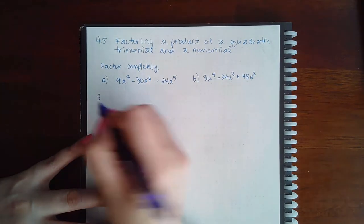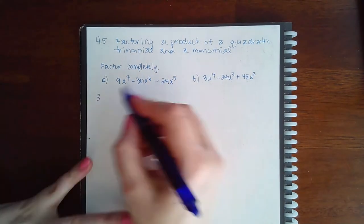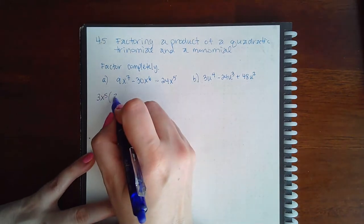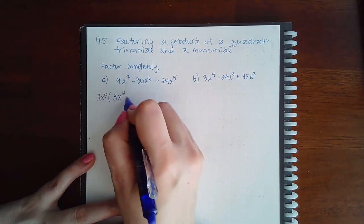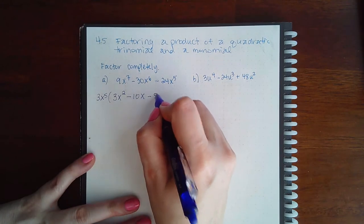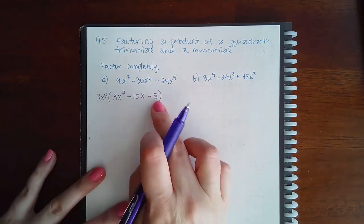The lowest exponent I can take out is x to the fifth. When I do that I end up with 3x squared minus 10x minus 8, and then I would have to continue factoring this using the AC method.